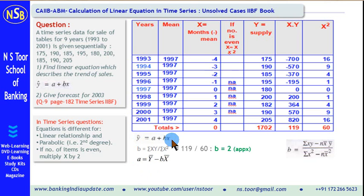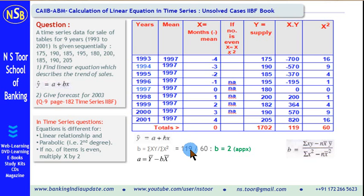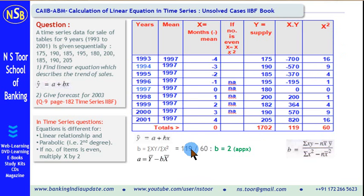First we calculate the value of b. Σxy = 1119, divided by Σx² = 60. So the value of b comes to approximately 2.